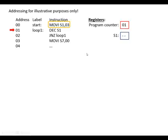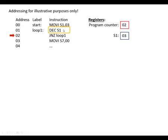Here's an example program with a loop. The first instruction loads the number 03 into register S1, and the program counter points to the address of the next instruction. The next instruction subtracts one from the contents of S1, so it becomes two.